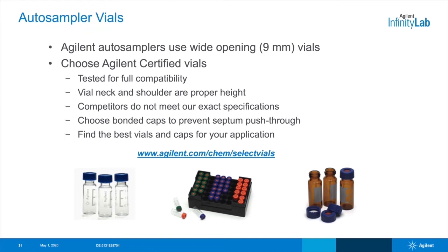Also important for the auto sampler is your choice of vial. Agilent auto samplers use two milliliter wide opening vials. For the best performance, choose Agilent certified vials — the only vials designed and tested for full compatibility with our auto samplers. Many Agilent auto samplers use a robotic arm to grip vials by the neck. Therefore, it's critical that the vial neck and shoulder are the proper height to prevent dropped vials and lost samples. Competitor products do not meet our exact specifications, which could lead to costly instrument downtime and potential loss of your precious samples.